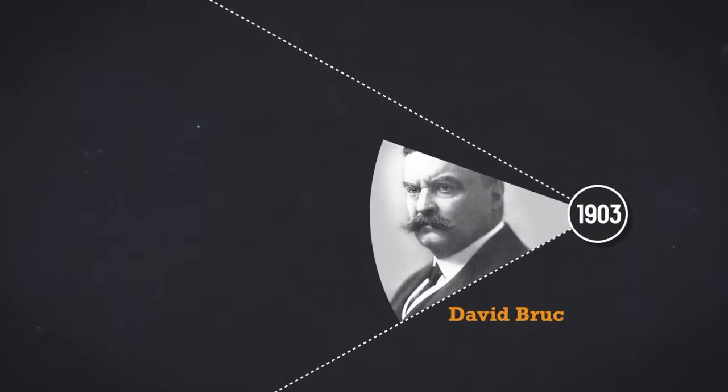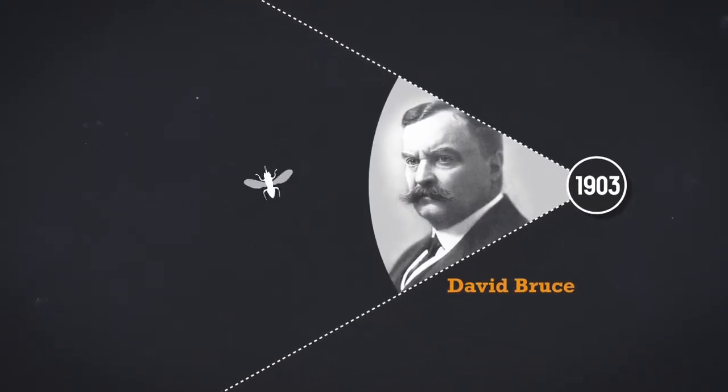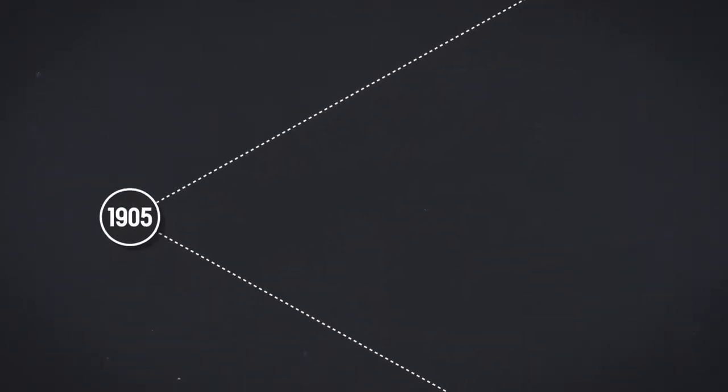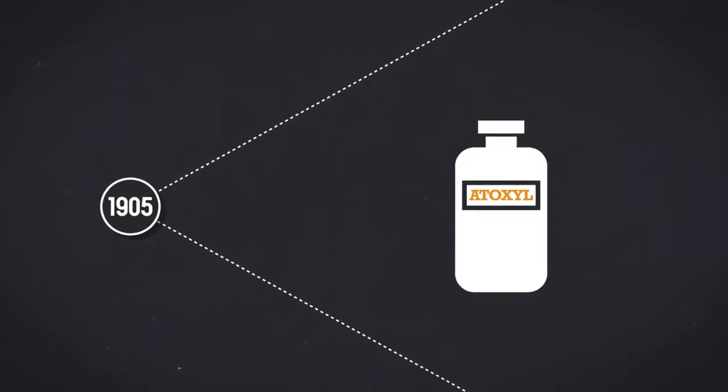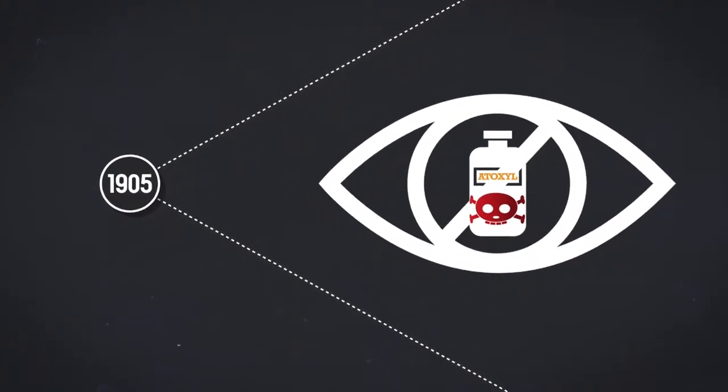In 1903, a British physician, David Bruce, discovered the vector of the parasite, the tsetse fly. In 1905, tests were performed on the first treatment, atoxil, a highly toxic arsenic compound that can cause blindness.